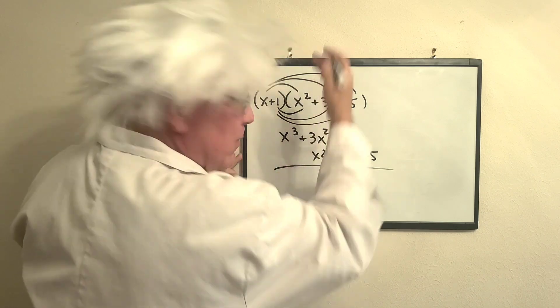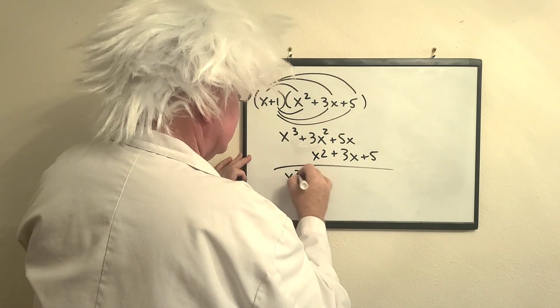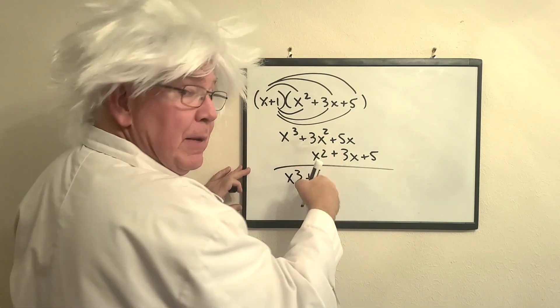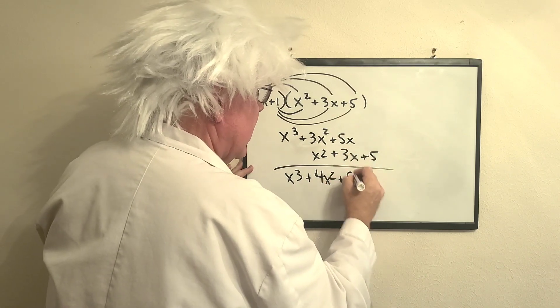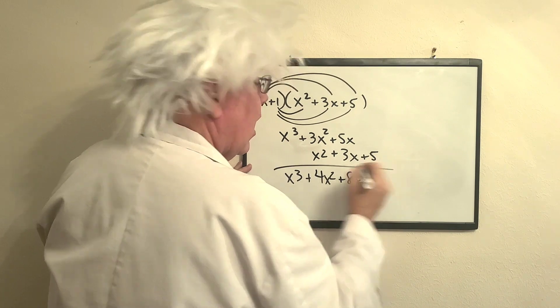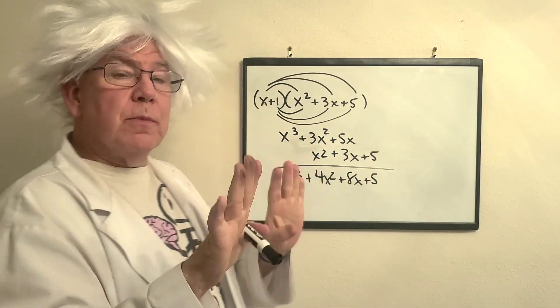So now I'm going to combine these together. This is x cubed. 3 plus 1 is 4x squared. 5x plus 3x is 8x. Now I just want to say this, Professor Algebra is going to say this one thing.